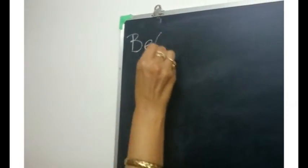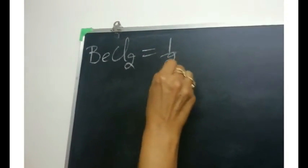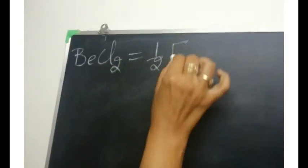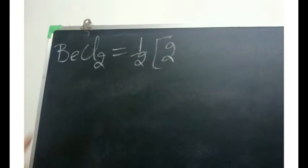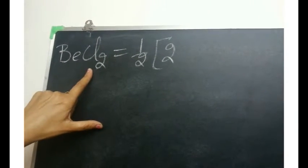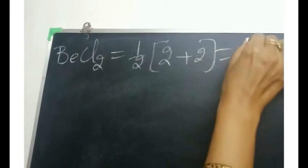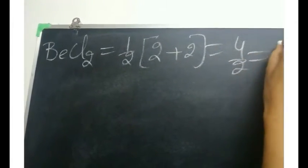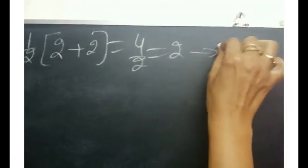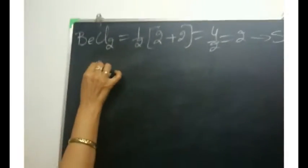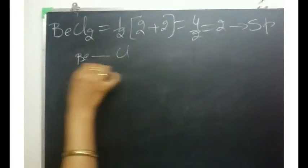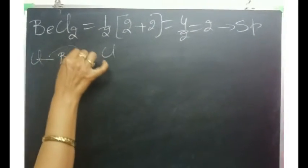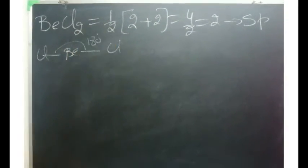Let us apply this formula to BeCl₂. Beryllium belongs to the second group and has 2 valence electrons. Applying the formula — half of beryllium's valence electrons plus surrounding monovalent atoms (chlorine is monovalent) — the answer comes out to be 2. If the answer is 2, hybridization is SP. SP hybridization means a linear geometry, so around one beryllium there are 2 chlorines with a bond angle of 180°.